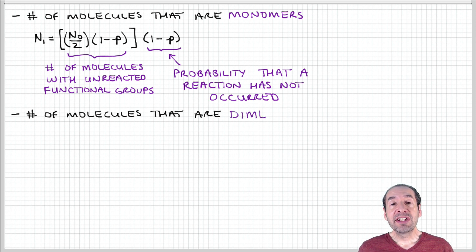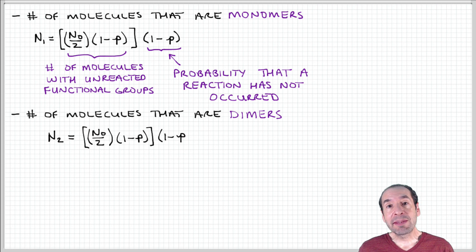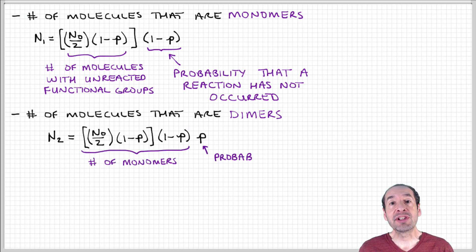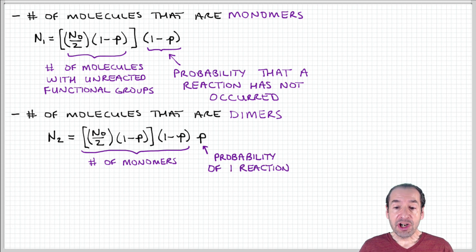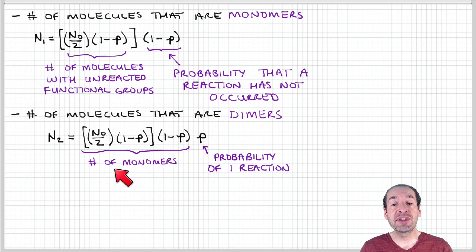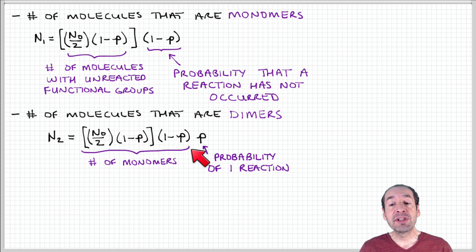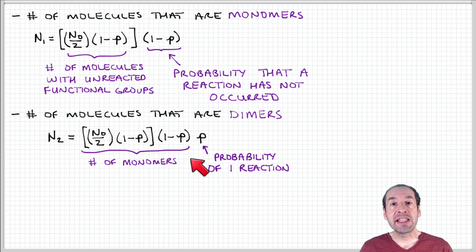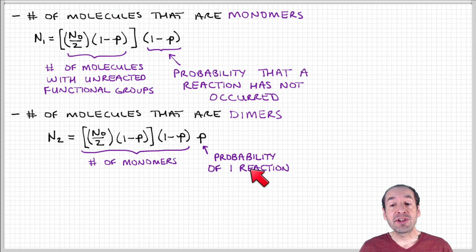We can take this further and ask how many of these molecules are dimers — in other words, how many have experienced only one reaction at a given point in time. Our starting point again is the number of molecules with unreacted functional groups times the probability that a reaction has not occurred, which gives us the number of monomers. Now we want to ask how many of these molecules have experienced only one reaction, and that is expressed by p. Therefore, the number of monomers times p gives us the number of dimers.